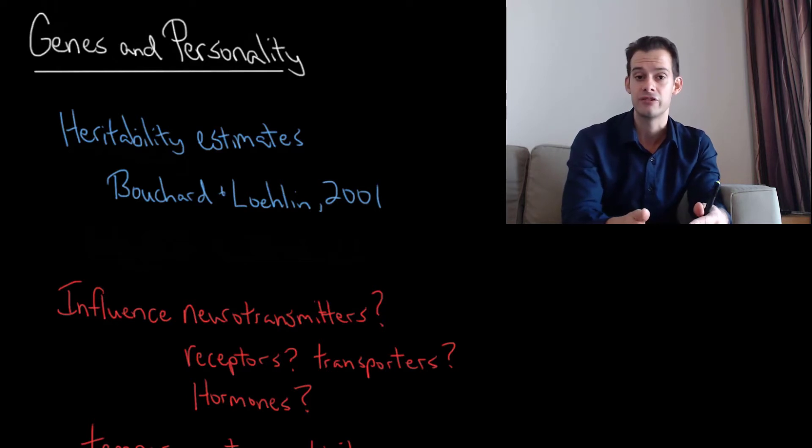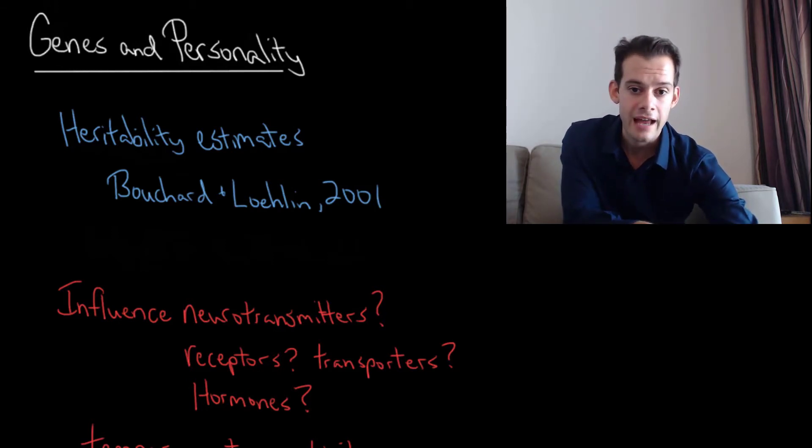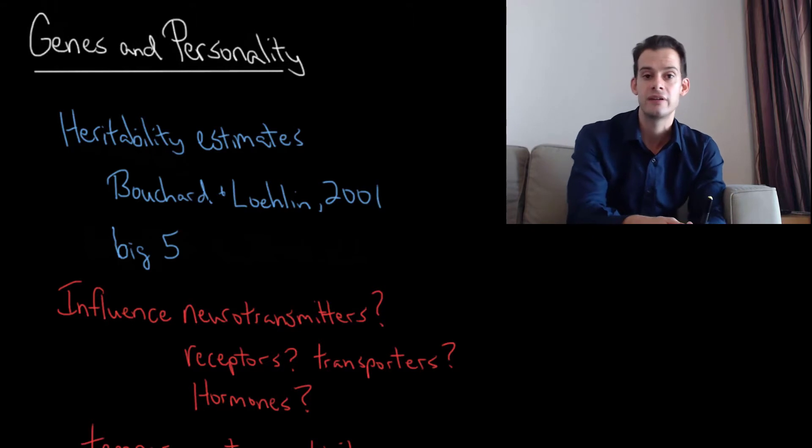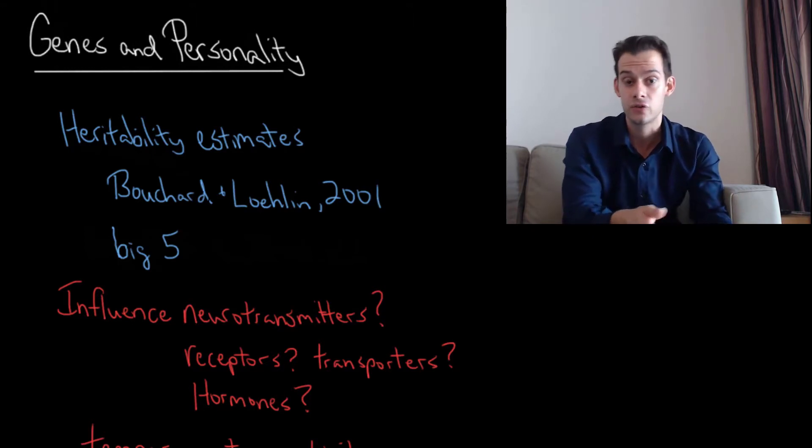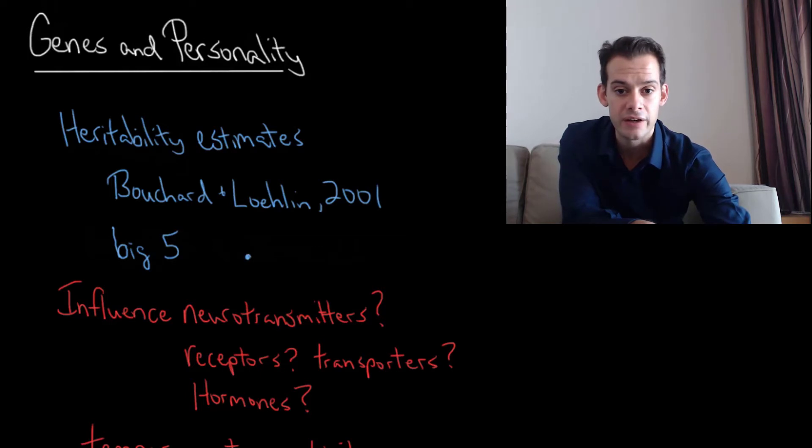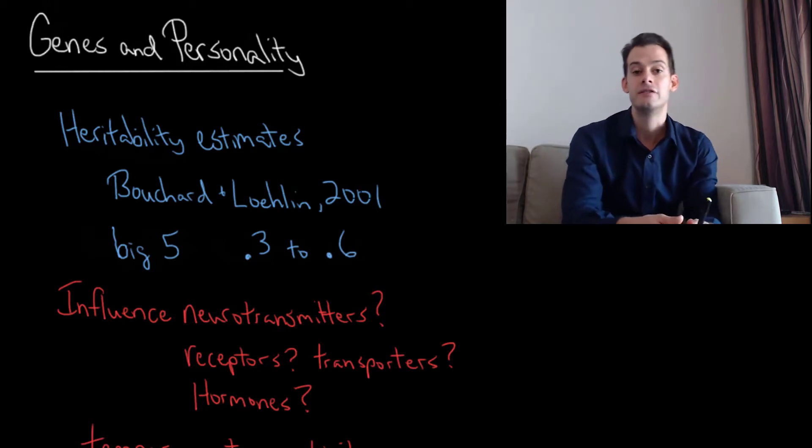One way that we could investigate this relationship would be to do twin studies. We could look at different types of twins who share different amounts of genes, identical twins and fraternal twins, and then see how similar they are for different personality traits. From this we could estimate the heritability of a particular personality trait. This is something that Bouchard and Lowland did in a 2001 study. They looked at the relationship between genes and the Big Five personality traits and found that the heritability estimates range from about 0.3 to 0.6.